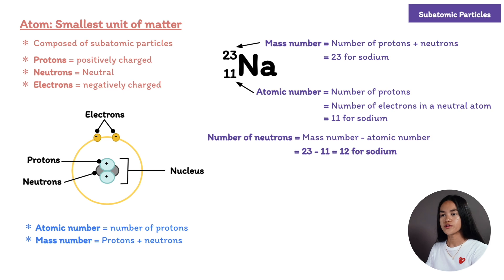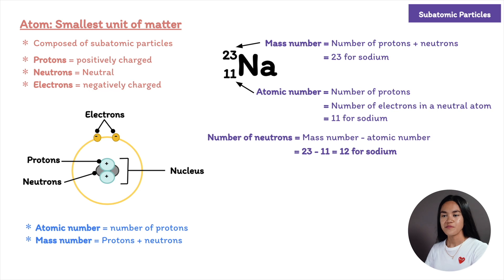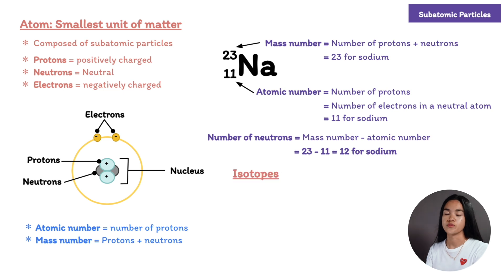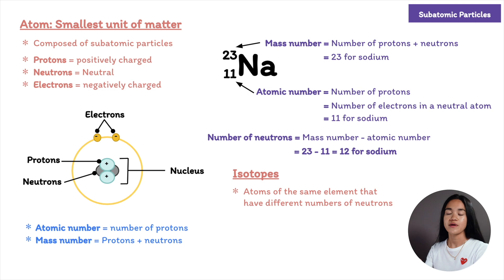For sodium, 23 minus 11 gives us 12 neutrons. All atoms of an element have the same number of protons, but some atoms have more neutrons than other atoms of the same element — these are called isotopes. Isotopes are atoms of the same element that have different numbers of neutrons.